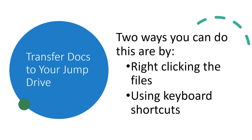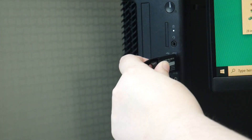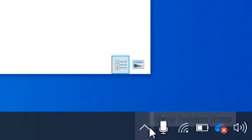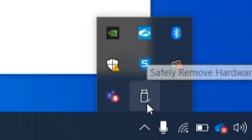Two ways you can go about transferring documents is by right-clicking on the files or by using keyboard shortcuts. Whichever route you choose, you'll start by inserting your drive into your computer's tower. Make sure you only input secure devices that you trust into your computer. Once your device is recognized, its icon should appear on your taskbar. If it doesn't, open File Explorer or your taskbar's hidden icons, and it should be there.